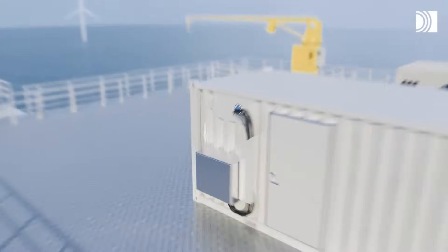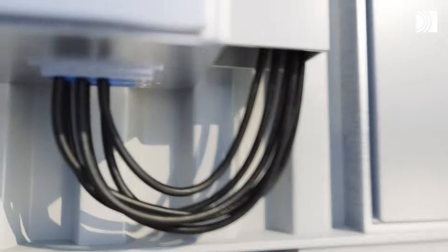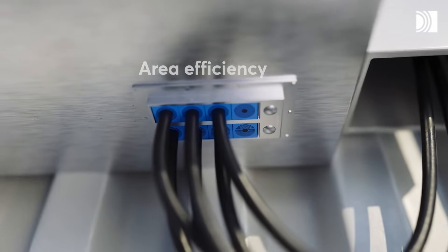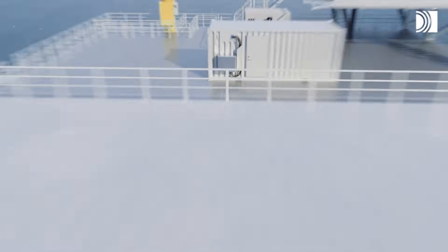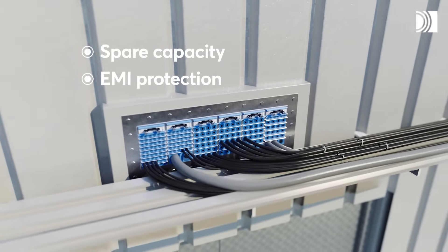Roxtec seals are ideal for substations in corrugated steel walls with welded sleeves, in sandwich panels and in rooftop entries, as well as in cabinets with high cable density. The seals provide spare capacity for future cables, as well as protection against electromagnetic threats.